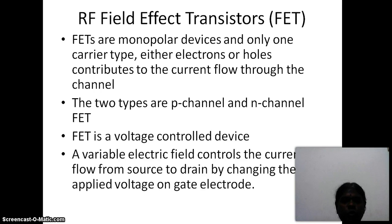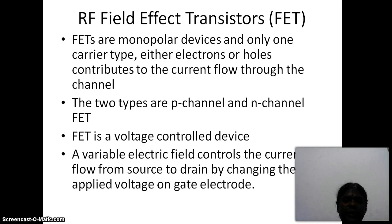There are two types of FET — P channel FET and N channel FET. FET is a voltage control device. That means the gate source voltage controls the current from source to drain. In the case of BJT, the base current controls the flow of output current from the emitter to collector. So BJT is a current control device whereas FET is a voltage control device.